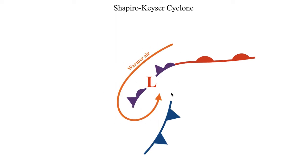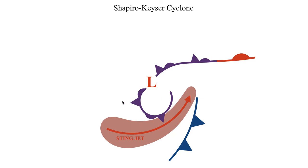As this warmer air wraps around the center of the cyclone you get an occlusion of sorts, but it's not the same occlusion as in an extratropical cyclone. The cold front becomes even more detached from the center of the low as the warmer air wraps around it. As this process continues into a more mature phase, that's when we can start to get the sting jet — the really strong downward-descending mid-level flow — and this is where the winds inside the Shapiro-Kaiser cyclone can really make their presence known.